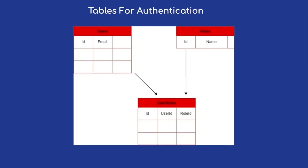Our authentication tables look like this: a Users table will contain user information, and a Roles table will hold information like whether a user is admin or super admin. There is also a mapping table between users and roles called UserRoles, where we can add multiple roles for any user, mapped with user ID and role ID. This is the ideal structure for our authentication tables.